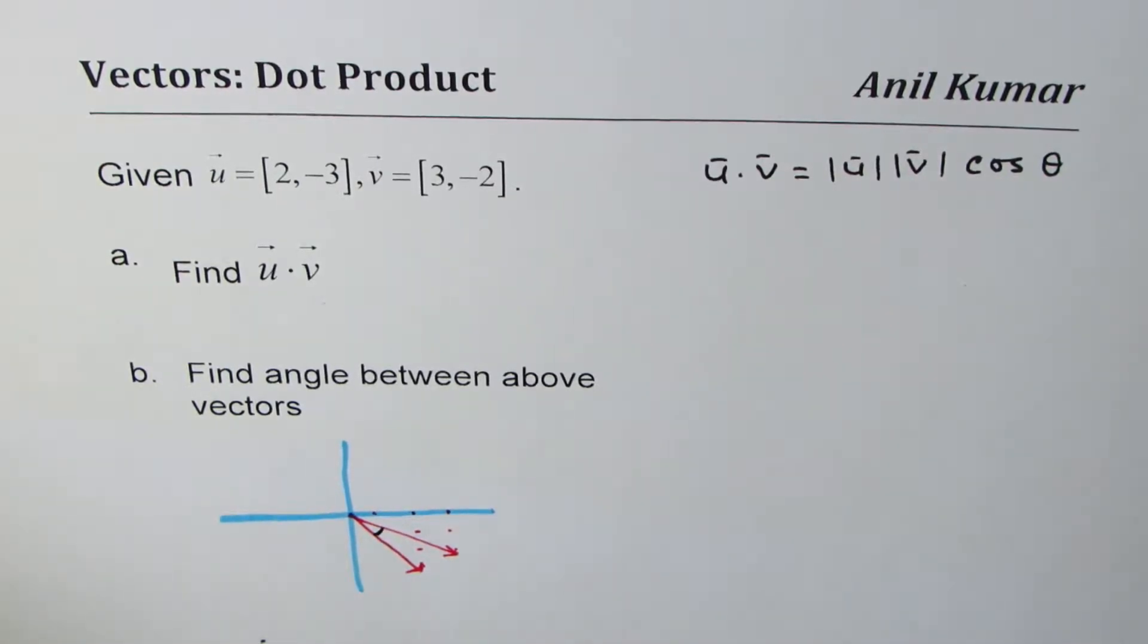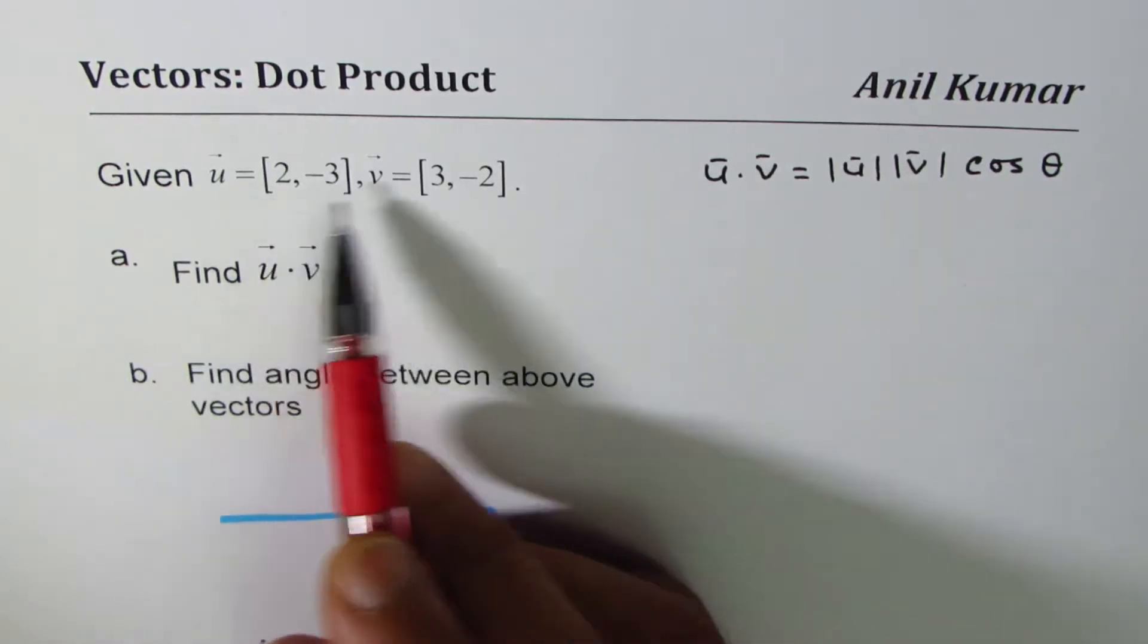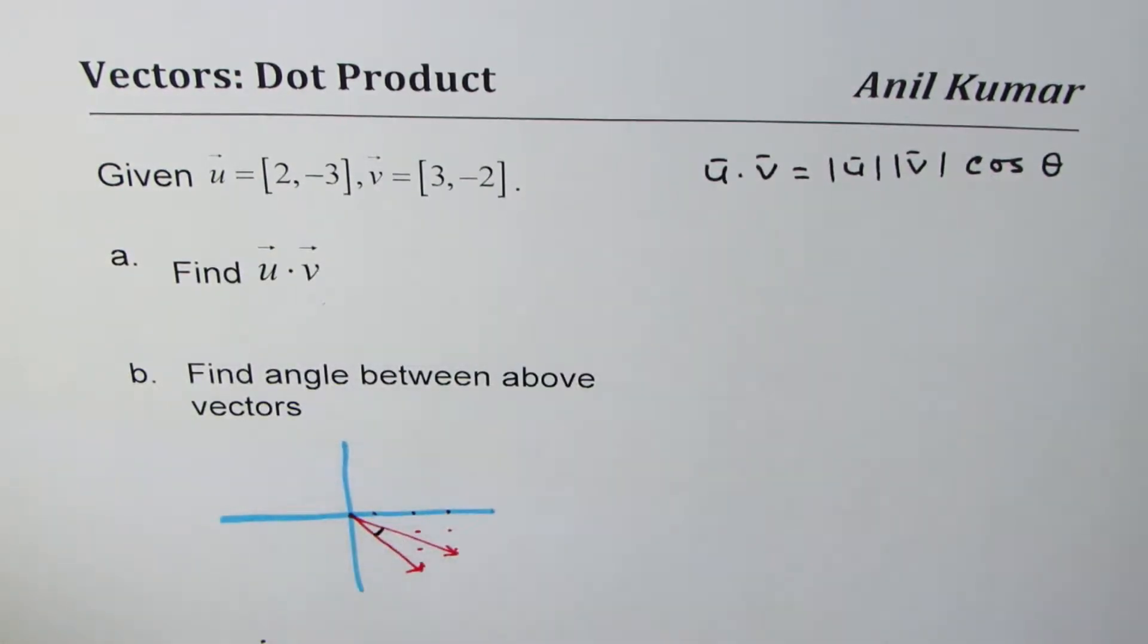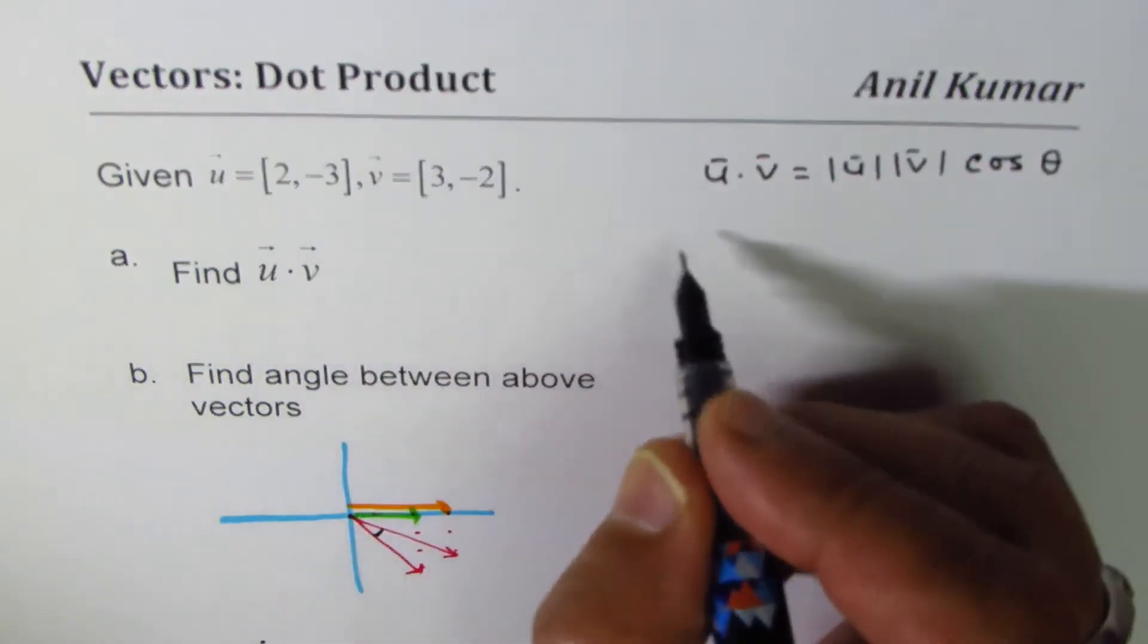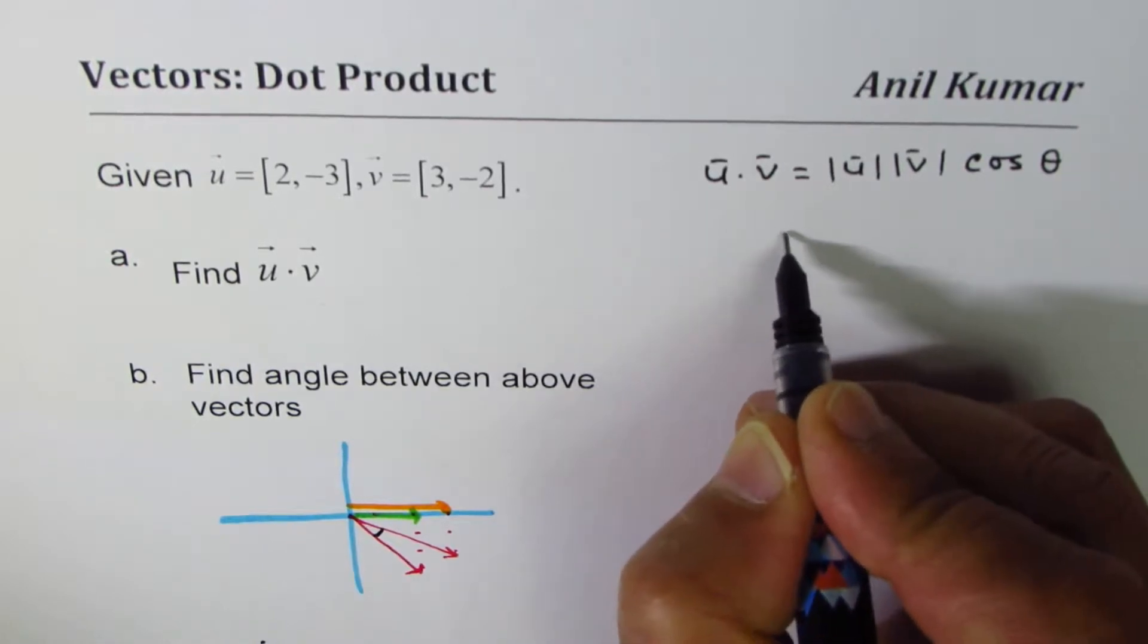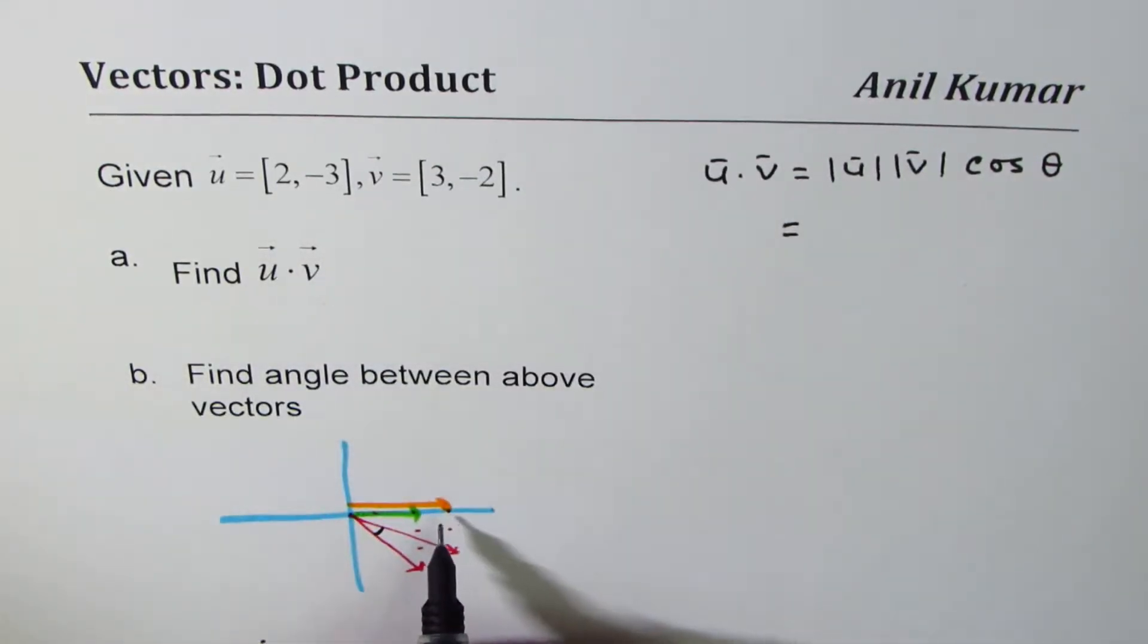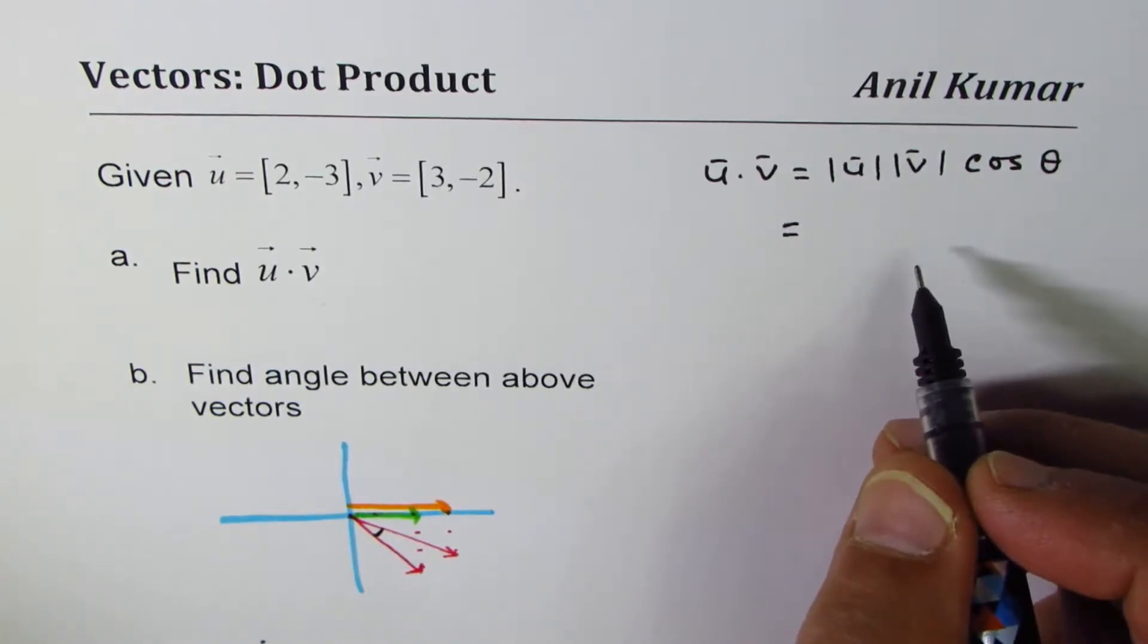That is how you would actually sketch the vectors. But when we say u dot v, we are multiplying their components. So if I multiply 2 with 3, so this 2 and 3 in the first case, let's say 2 is this and 3 for v will be this. Now when they are in the same direction, cos theta is zero, so their product is one.